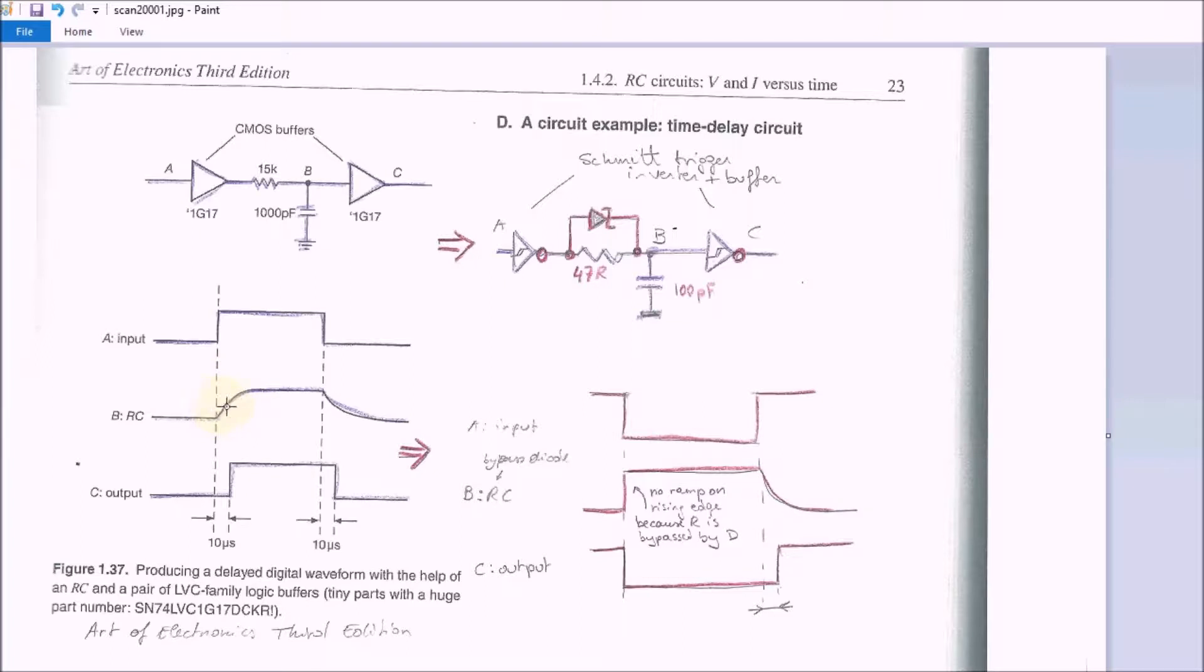So it will generate a predictable delay. Now this circuit from the Art of Electronics is symmetrical, so it will introduce a delay at the rising edge and at the falling edge.